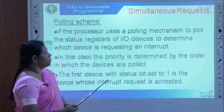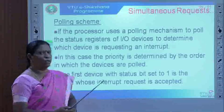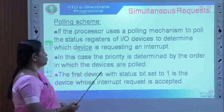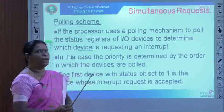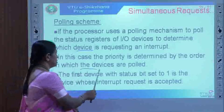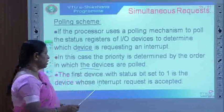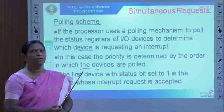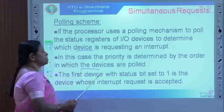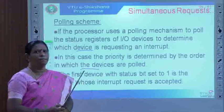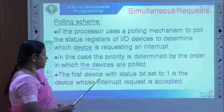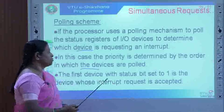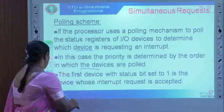If the processor uses a polling scheme to poll the status register of the IO device to determine which IO device is requesting an interrupt, in this case the priority is determined by the order in which the devices are polled. The first device with its status bit set to 1 is the device whose interrupt request will be accepted.